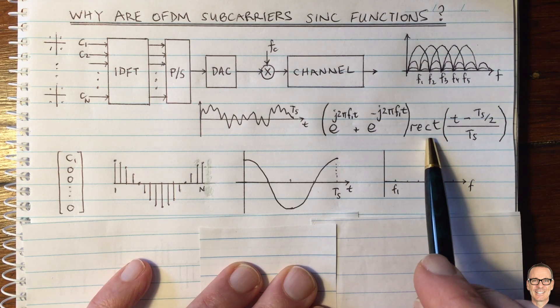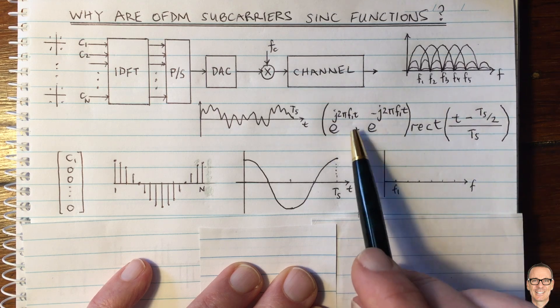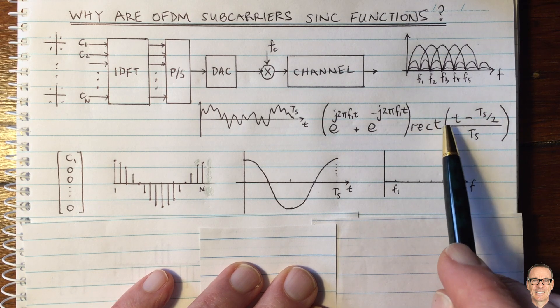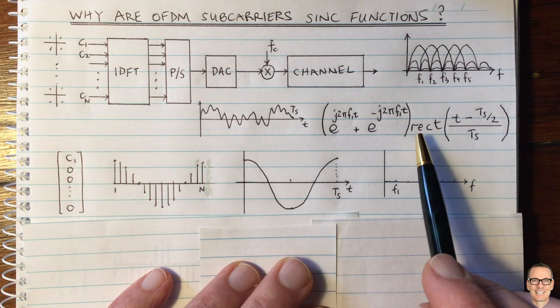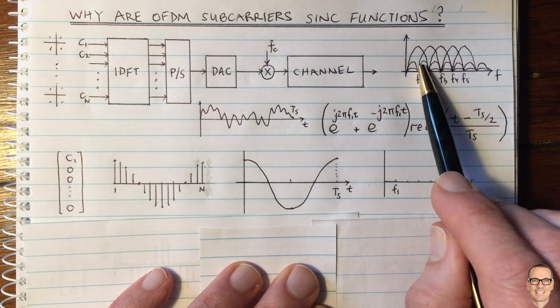Because if we want to think about the frequency domain of this expression here, then it's a multiplication in the time domain, so it's going to be a convolution in the frequency domain. And the Fourier transform of a rect function is a sinc function.